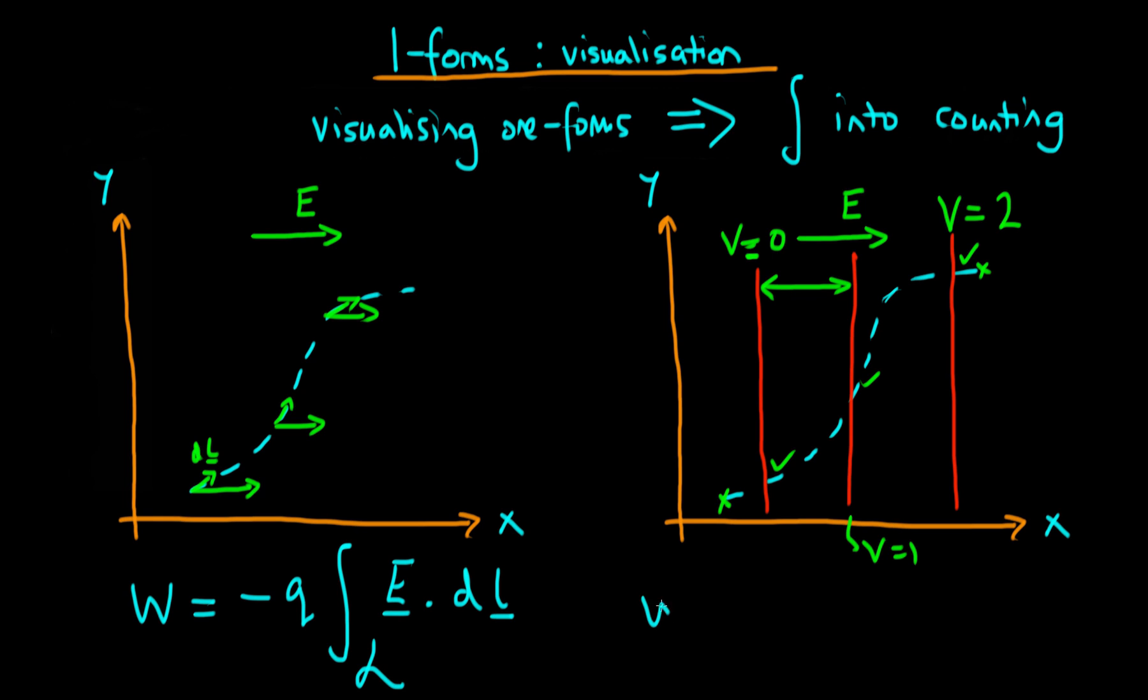So how do we do that? Well, essentially what we did is we worked out the work done by taking minus Q, the charge, integrated with this one-form, which I'm just going to write as epsilon here, along the curve L. And because of the number of surfaces that that actually pierced, we worked out visually that was going to be approximately 2.5 times Q.